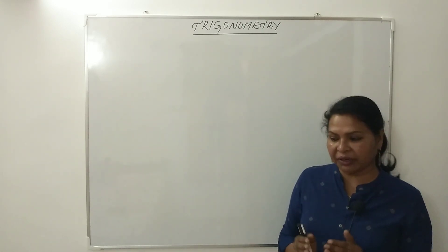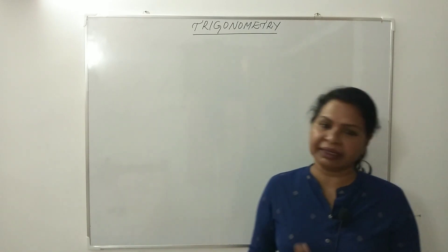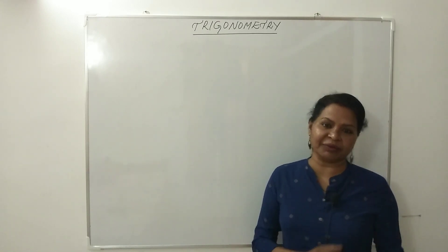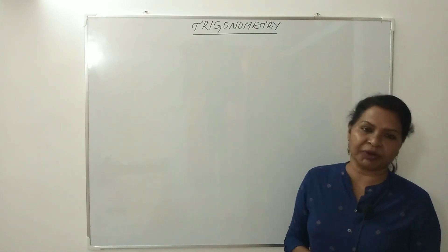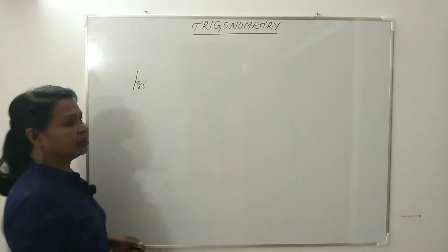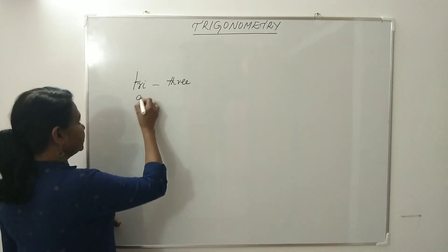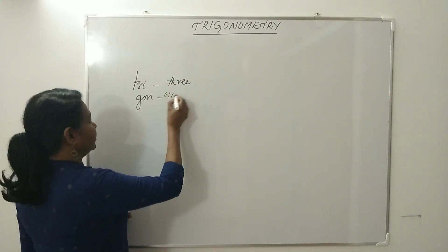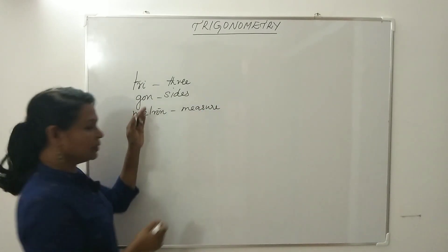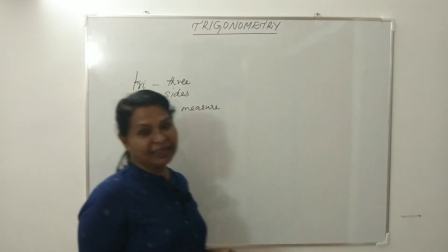This trigonometry word is actually derived from Greek words. The word meaning is: 'tri' means three, everybody knows that. 'Gon' — G-O-N — means sides, and 'metron' means measure. So trigonometry is the study of the relationship between angles and the sides of a triangle.